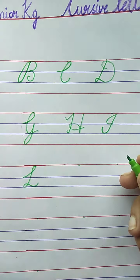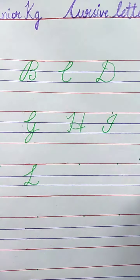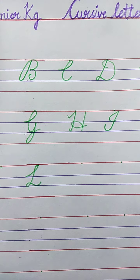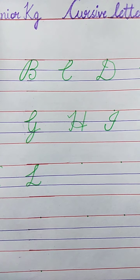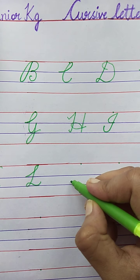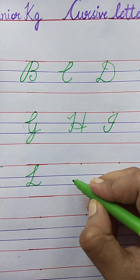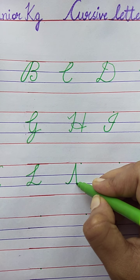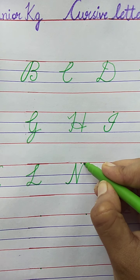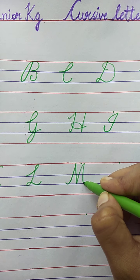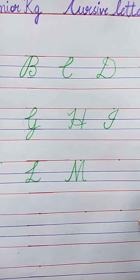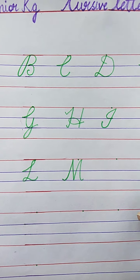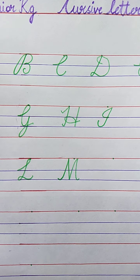Now, tell me the next letter. M. M for Monkey. See here. Draw with me: slanting line, one more slanting line, one more, and this is the last slanting line. The spelling of Monkey is M-O-N-K-E-Y.